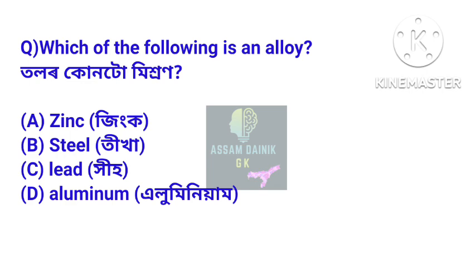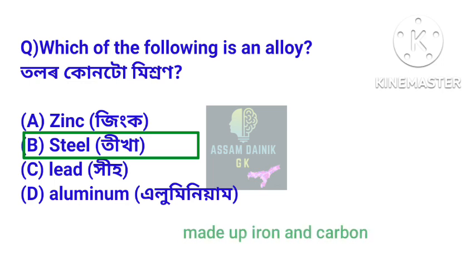Next question: Which of the following is an Alloy? Answer: Steel. Steel is an alloy — it is a mixture of Iron and Carbon.